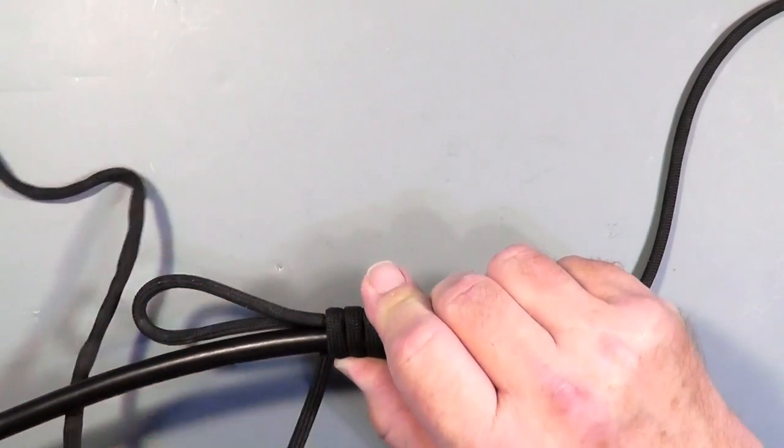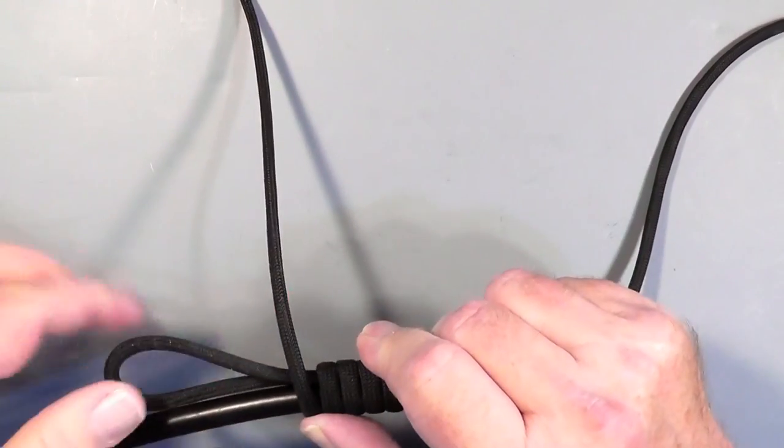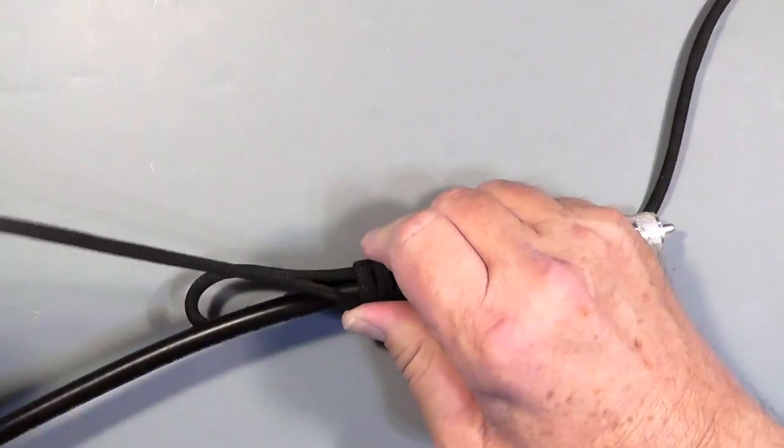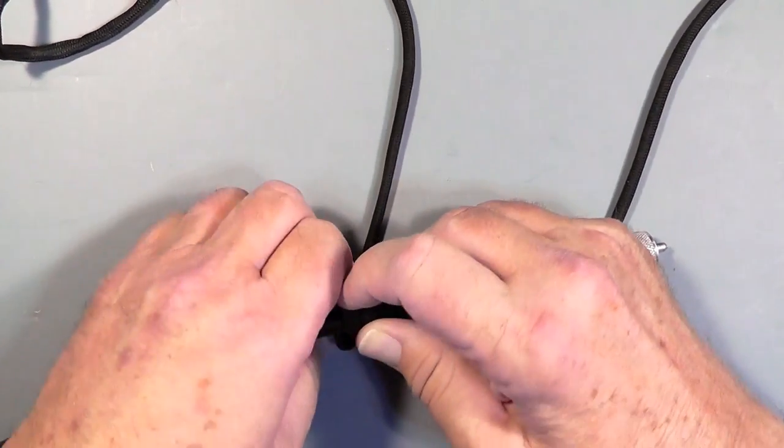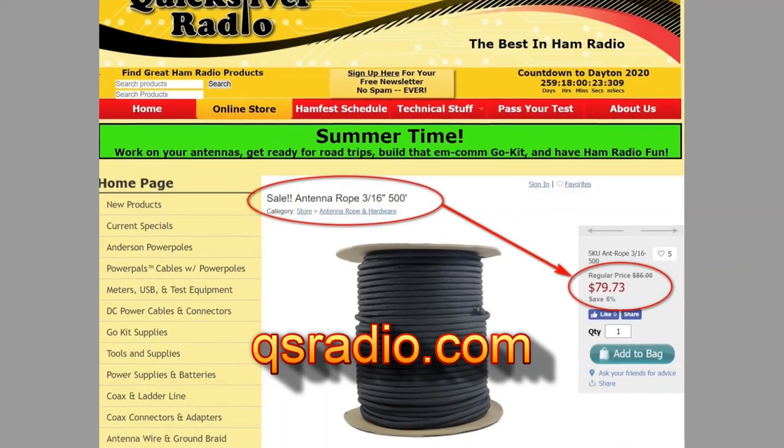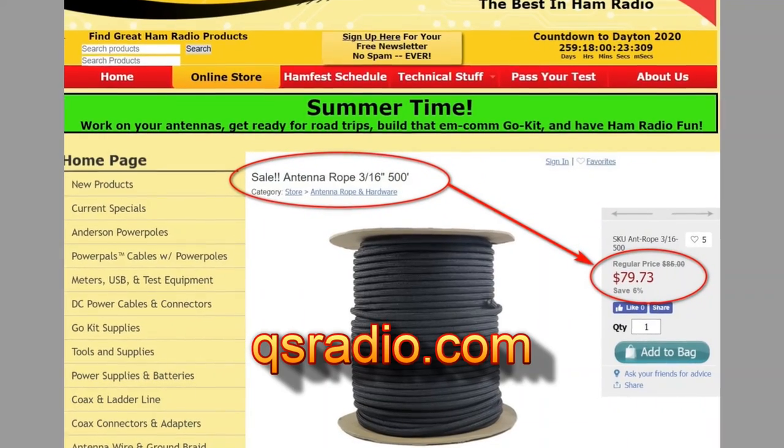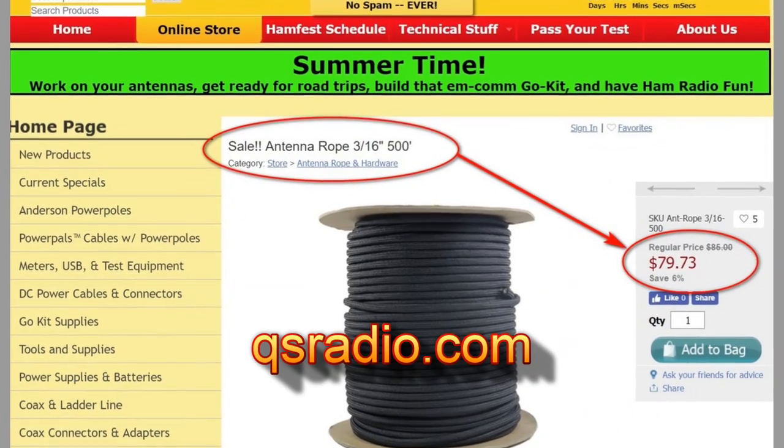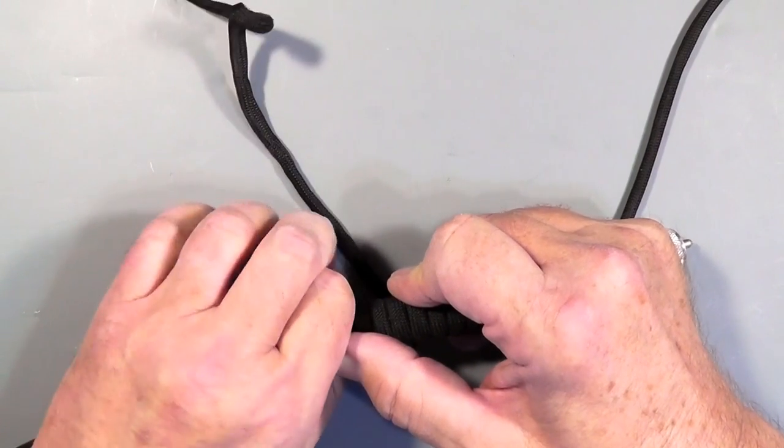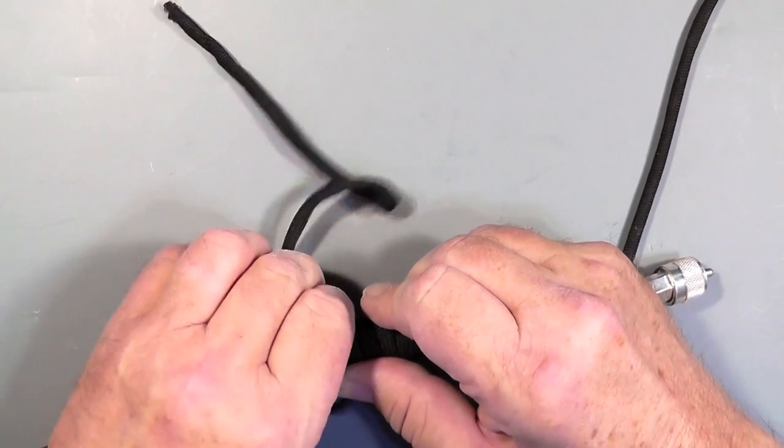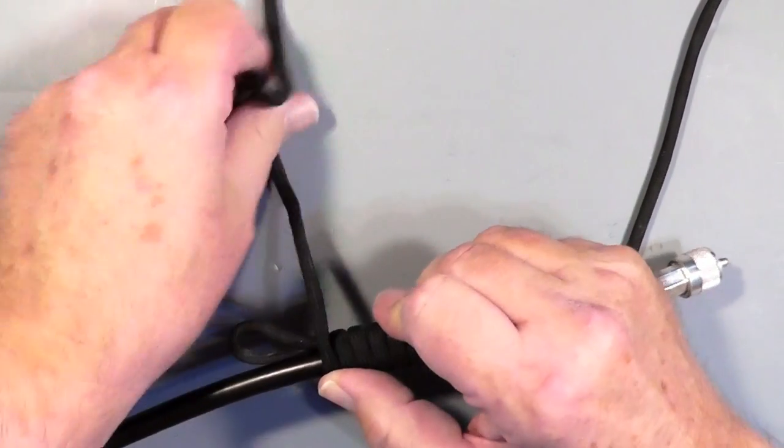We're going to wrap this around and around. Now each one of these wraps puts a little bit of grip on the coax cable. Any one of them by itself is not enough to hold the antenna up. But we're going to just keep wrapping up. You've got this loop hanging out here. That's what we're wrapping around.